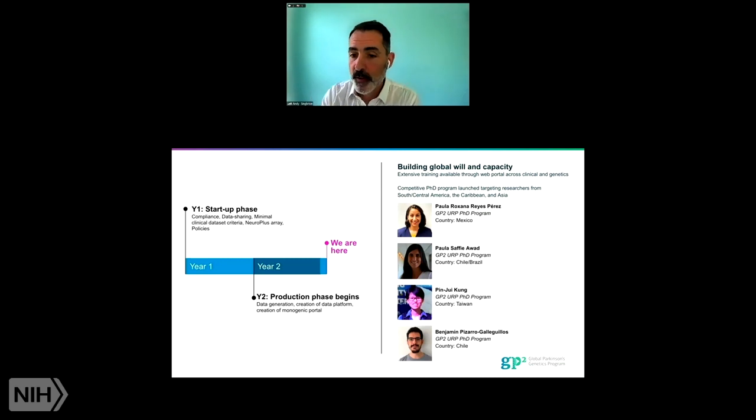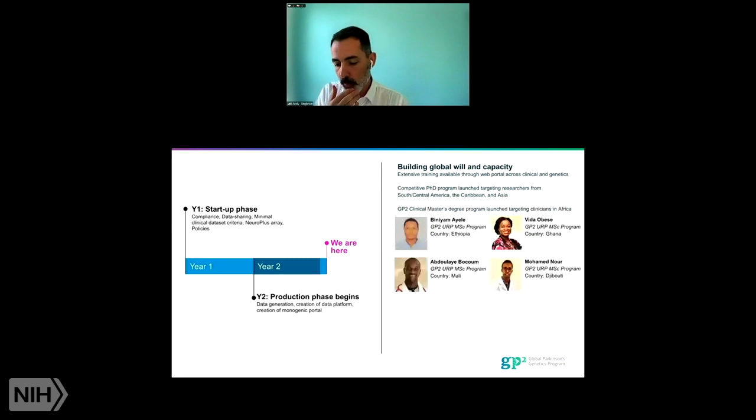As part of GP2, we have helped support a competitive PhD program. So I mentioned that we have really in the first phase targeted new collections across Africa, South America, and throughout Asia. This was targeted for Central South America and Asia. So we have new PhD programs all working on GP2. These students from Mexico, Chile, Taiwan, and Brazil. We've also supported clinical training for clinicians from Africa. So these are clinicians from Ethiopia, Ghana, Mali, Djibouti, who are now in a master's clinical program in partnership with the University College London, where they come over and train specifically in movement disorders. Often these are countries where there are no movement disorder specialists, where there may only be one or two neurologists. So again, this idea of trying to build global will and capacity.